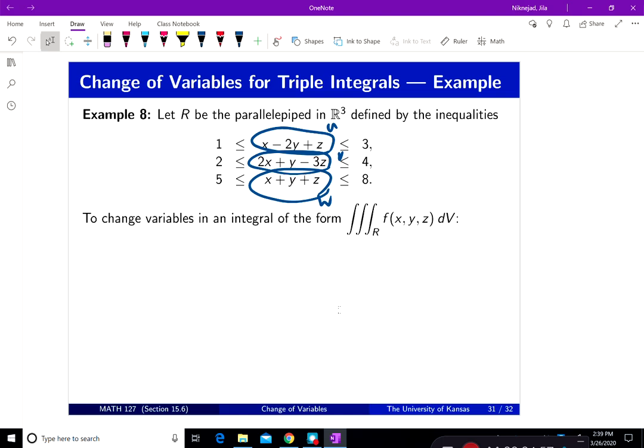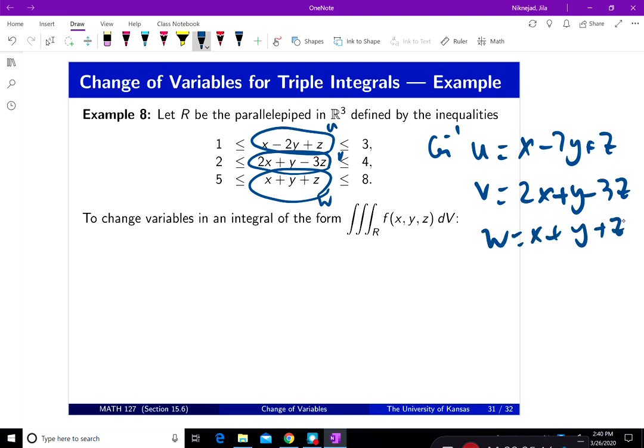We want to be able to—one thing again, the Jacobian can be computed by finding the Jacobian of G inverse. And this is giving me the G inverse: u equals x minus 2y plus z, v equals 2x plus y minus 3z, and w equals x plus y plus z. So I can find the Jacobian using the G inverse.